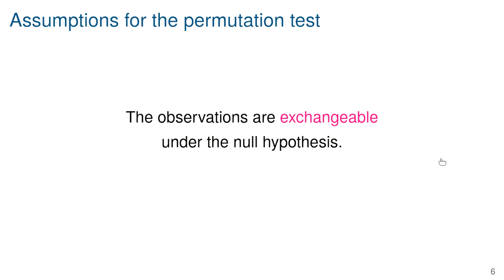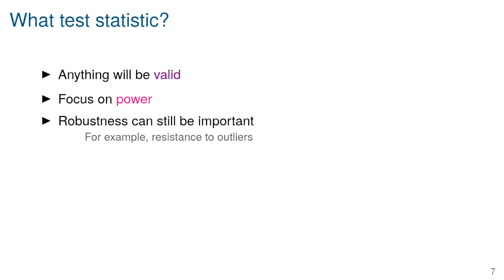When the underlying population distributions are approximately normal, the two methods give the same answer. When there are departures from normality, the permutation test is the trusted result and the normality assumption can lead you astray. So basically you should always do the permutation test when it's appropriate. A related point: in this kind of randomized experiment I'm using the t statistic, but I could use any test statistic.